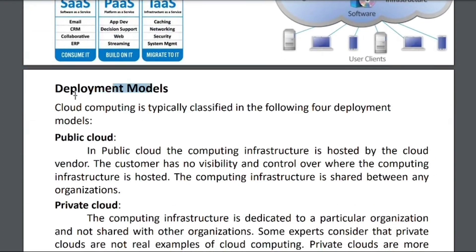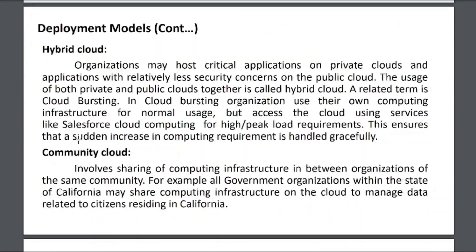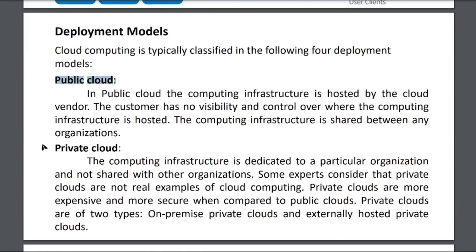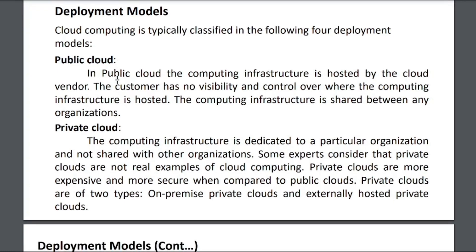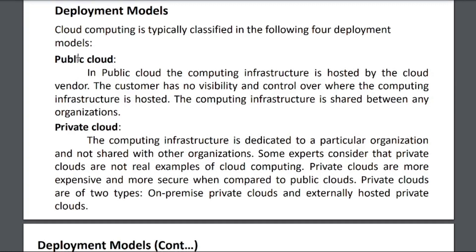Deployment models include public cloud, private cloud, hybrid cloud, and community cloud. Deployment models refer to how we deploy our servers and who has physical control of the server. Public cloud uses third-party resources — we do not have full access to the hardware; we just use the software or platform provided as a service. For example, when using AWS, we can configure everything but do not have access to the physical hardware or infrastructure.